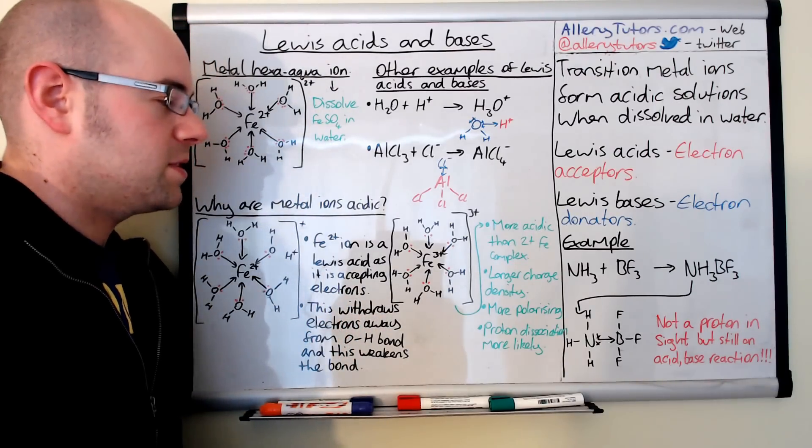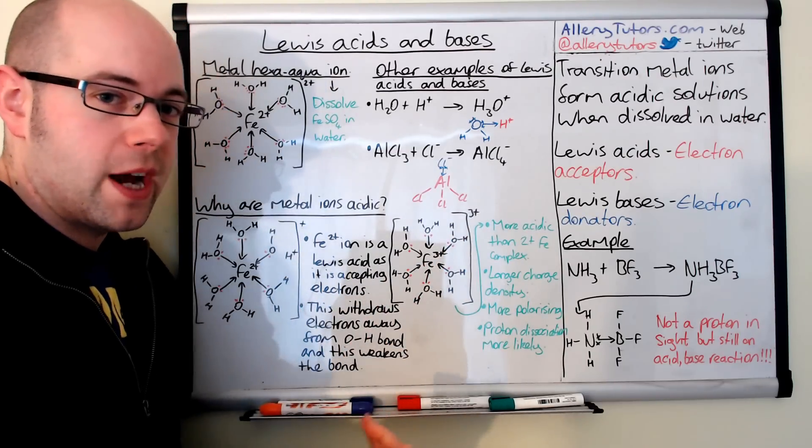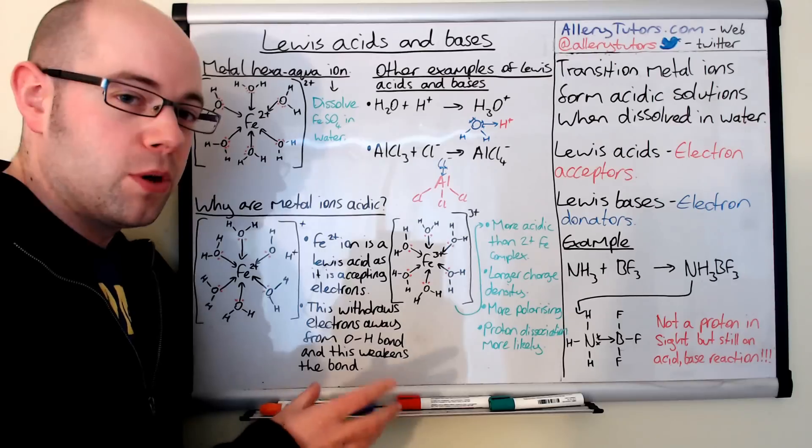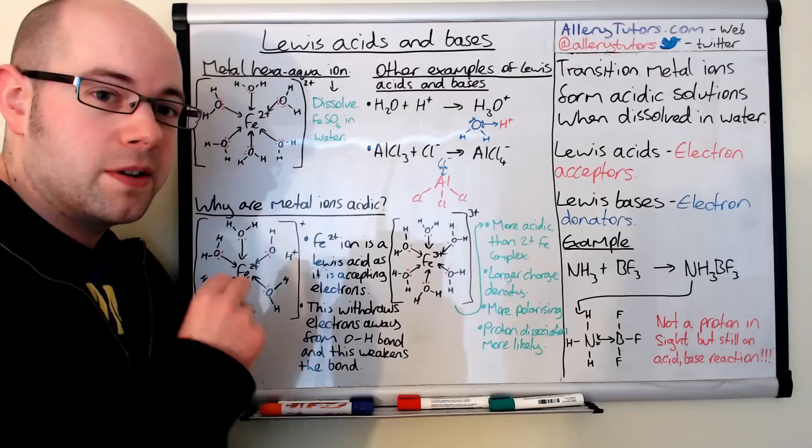Instead of just maybe one or two protons being released, this is going to make the bond even weaker and we're going to get maybe two or even three protons depending on how acidic it is, probably more likely to be two. Therefore it will produce more H+ ions as a result, and these complexes are more acidic than 2+ complexes. Obviously the smaller the ion as well, the more acidic your compound is.